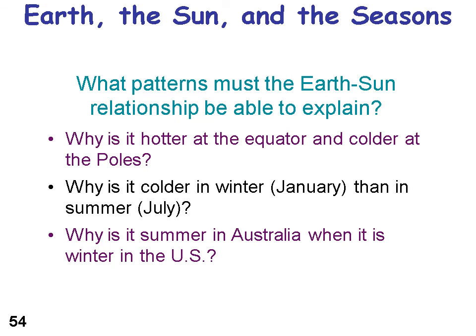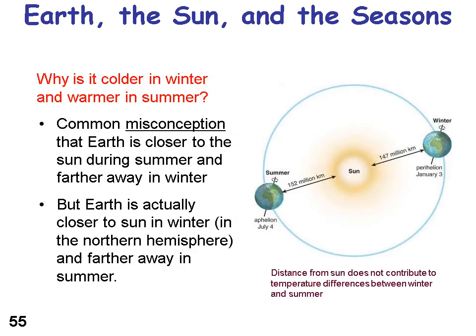What patterns must the Earth-sun relationship explain? Why is it hotter at the equator and colder at the poles? Why is it colder in January and warmer in July? Why is it summer in Australia when it's winter in the U.S.? Note that this lecture is from a Northern Hemisphere perspective. It's a common misconception that the Earth is closer to the sun in summer — actually the Earth is closer to the sun in winter and further away in summer, but that distance doesn't really drive our seasons.